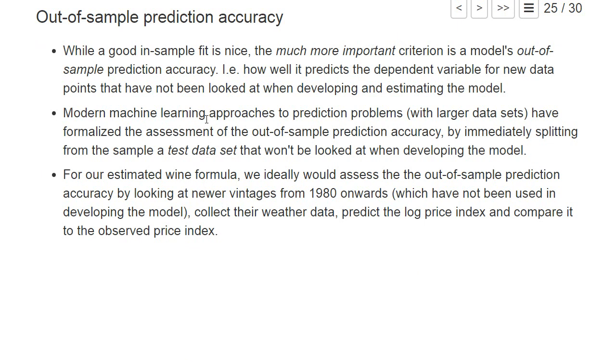Modern machine learning approaches to prediction problems have nicely formalized this assessment of out-of-sample prediction accuracy. Basically, before you estimate a model, you split it into a test data set and a remaining training data set, and first develop your whole model only on the training data set, and only in the very end look at the test data set to assess the prediction accuracy.